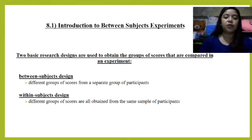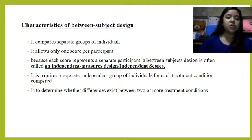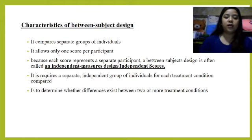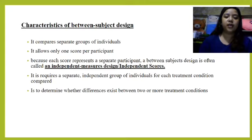In Within Subject Design, you get two sets of scores from your participants, and they are all obtained from the same sample under the same treatment conditions. The characteristics of Between Subject Design are: first, it compares separate groups of individuals; second, it allows only one score per participant. Because each score represents a separate participant, Between Subject Design is also called independent measures or independent scores. It also requires a separate or independent group of individuals for each treatment condition compared.